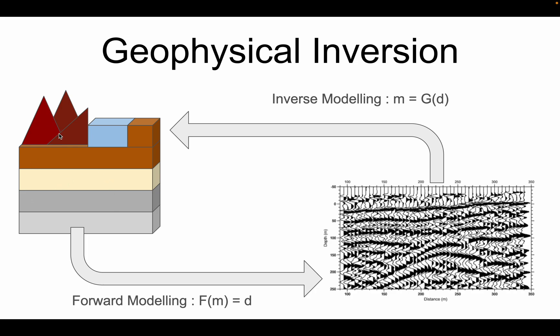We can see here there are mountains and a water body as well. Then we do forward modeling using the physics — we might be generating electromagnetic waves, seismic waves, gravity waves, or magnetotelluric waves. Then we record it and generate these sections, which are called calculated data. Then we try to reduce the misfit between the calculated data and the observed data.